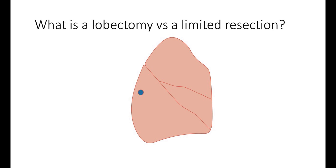Before we get into the article, let's review some basic definitions. So what's the difference between a lobectomy, a segmentectomy, and a wedge resection? For this example, we'll use a patient who has a T1 tumor in the periphery of the superior segment of the right lower lobe.